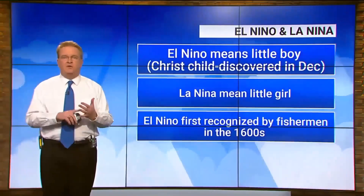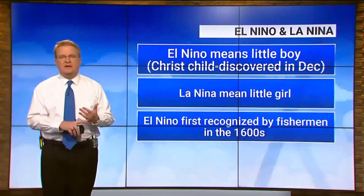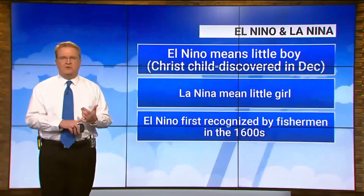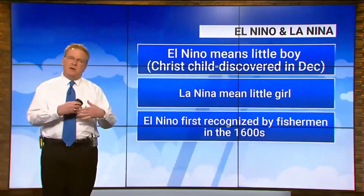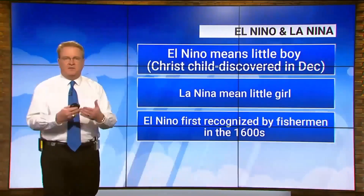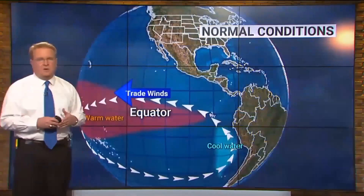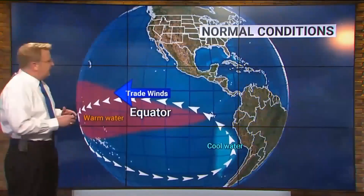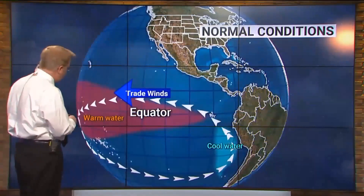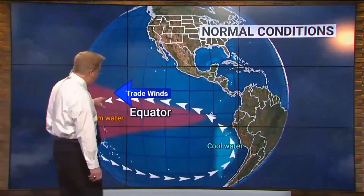El Niño was first discovered by fishermen in the 1600s, so it's been around a long time, but people didn't really start talking about it until the 1990s. Folks are beginning to get a little more educated about it. Now to understand it, you first need to understand the normal weather patterns in this region of the world.